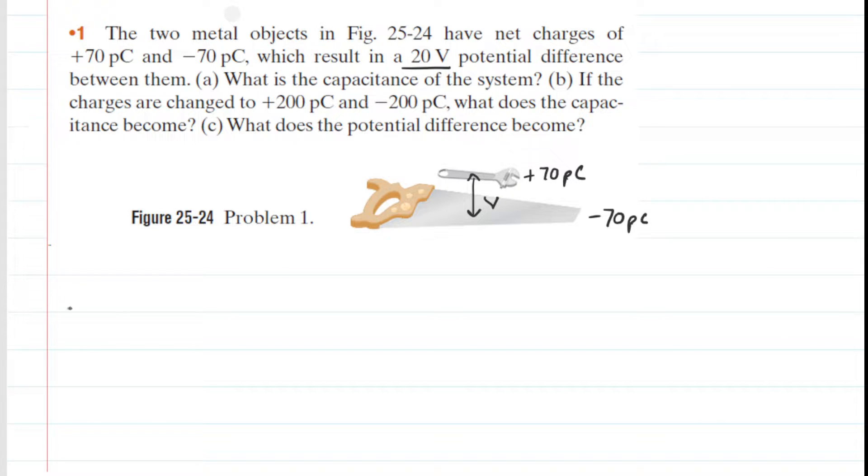What we need to do in part A is to calculate the capacitance of the system. So we need a relationship between charge, capacitance, and potential difference, which is given by this equation here.